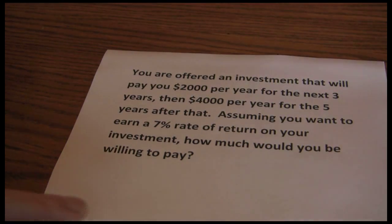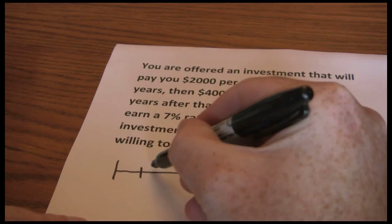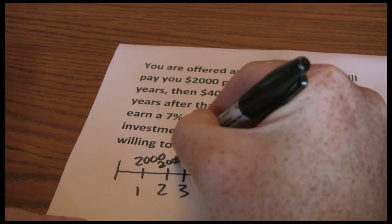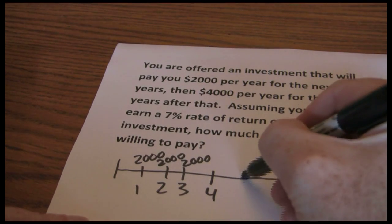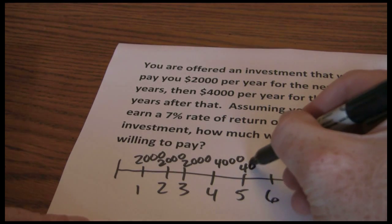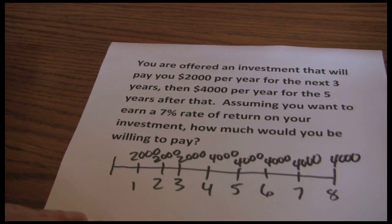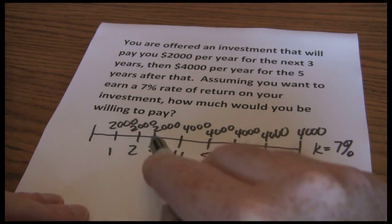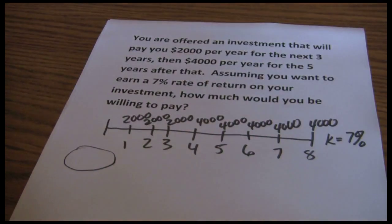If we want to do this on a timeline, we've got a total of eight years. In the first three years we're going to be getting $2,000 per year, and then the next five years we're going to get $4,000 per year. Our rate of return on this investment is 7%. We want to find out what that's worth today — the present value.